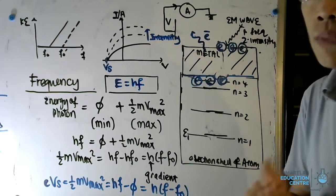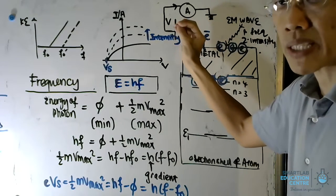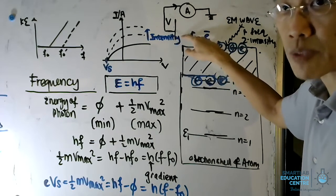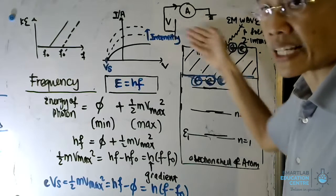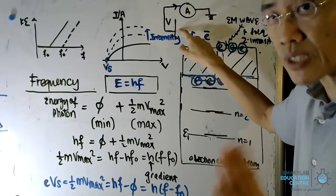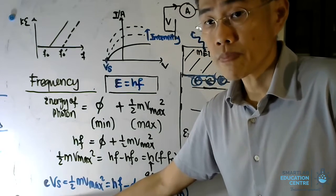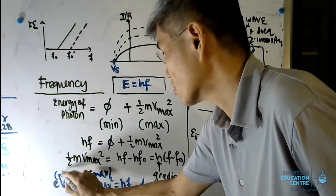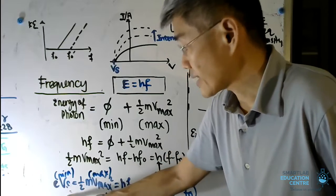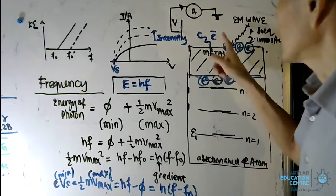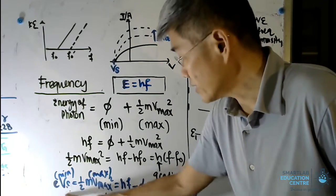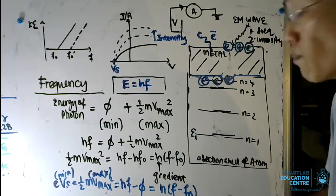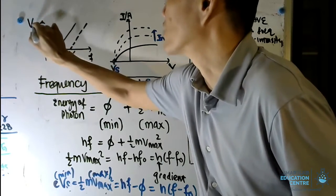The stopping potential Vs is introduced next. Photoelectrons emitted possess a maximum kinetic energy. You can adjust the voltage of the collecting plate to be negative to repel electrons from reaching it. Adjusting the potential until current flow becomes zero gives the stopping potential, which is a minimum value. The kinetic energy is fully converted to electric potential energy, so eVs = ½mv² = hf − work function. It is also possible to sketch a graph of Vs against frequency, where the gradient is h/e.